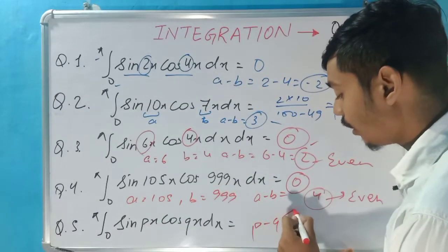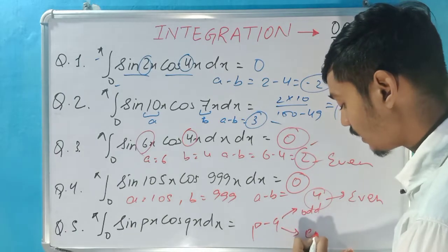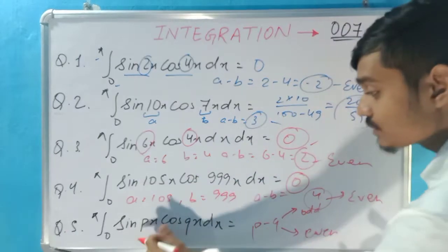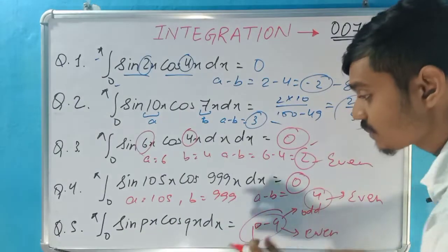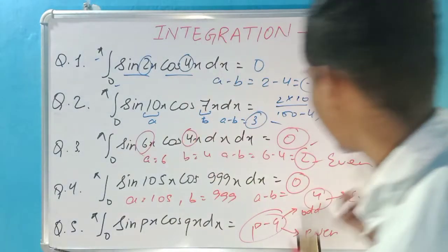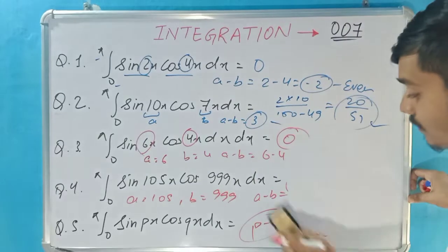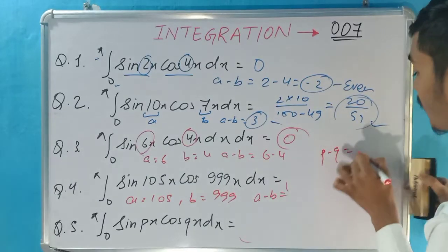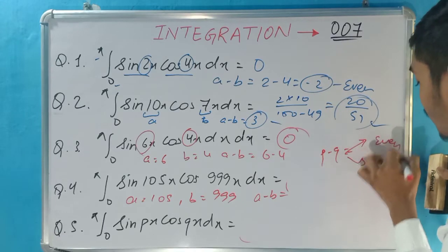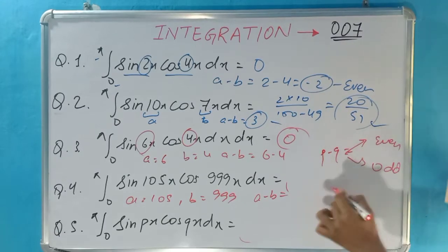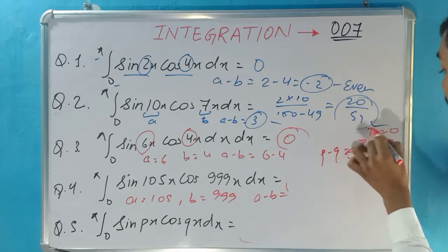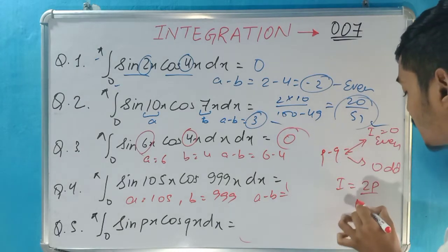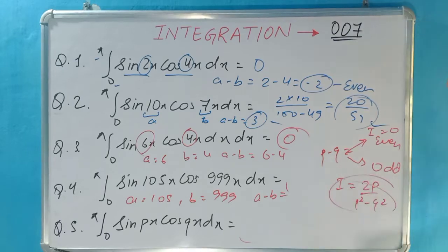For the fourth question, a is 1005 and b is 999. We need a minus b, and we only need to check the unit digit: 9 minus 5 is 4 at the units place, so a minus b ends in 4. Since 4 is even, this number is even, and therefore the integral is 0 for this type of question.